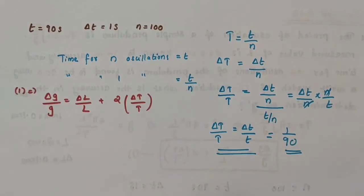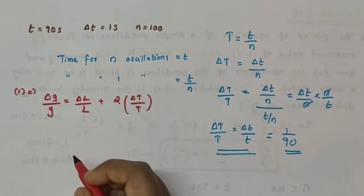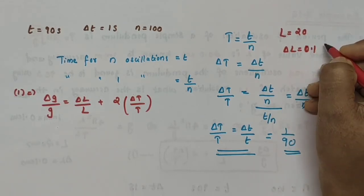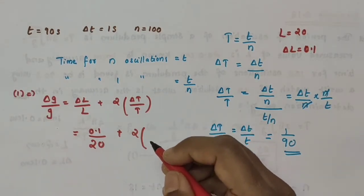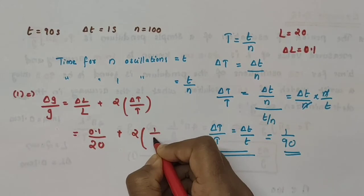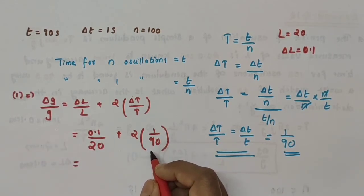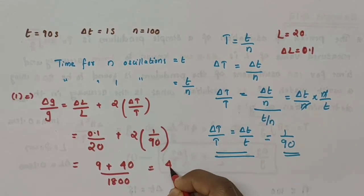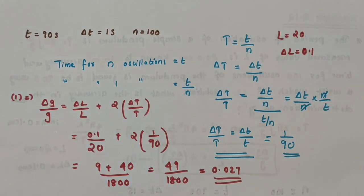From equation 1, the relative error in g is δg/g = δL/L + 2·(δT/T). Substituting: δL/L = 0.1/20 and δT/T = 1/90, so δg/g = (0.1/20) + 2·(1/90). Cross-multiplying: (0.1×90 + 2×20) / (20×90) = (9 + 40) / 1800 = 49/1800 = 0.027.